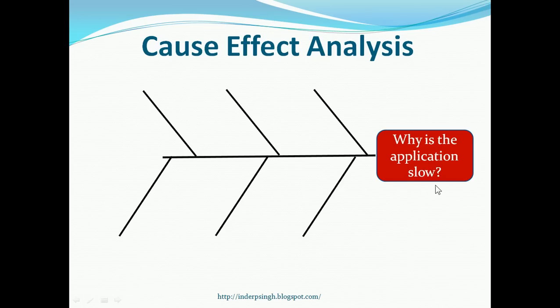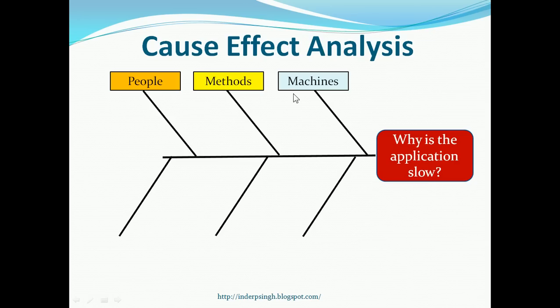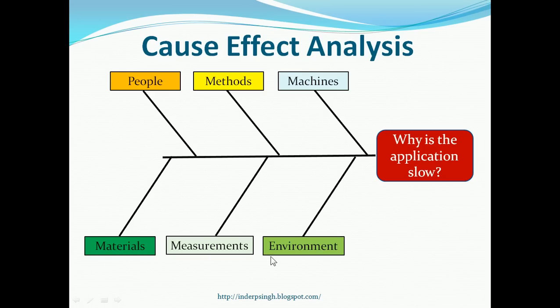Now, the facilitator writes the problem statement as a question. He or she draws a diagram with the effect, then adds Cause-Categories: People, Methods, Machines, Materials, Measurements and Environment. These are the same categories that we saw earlier.